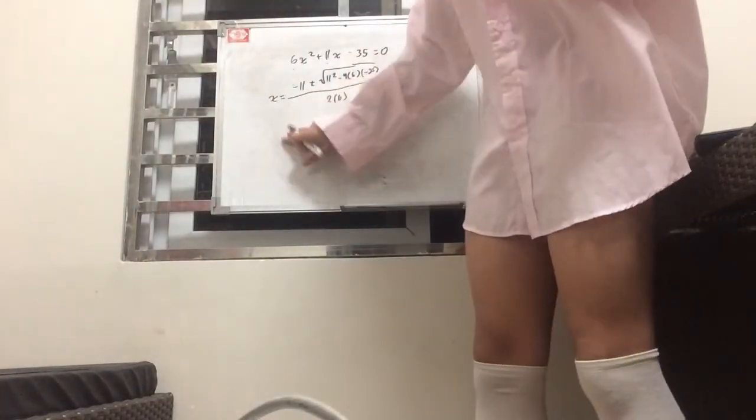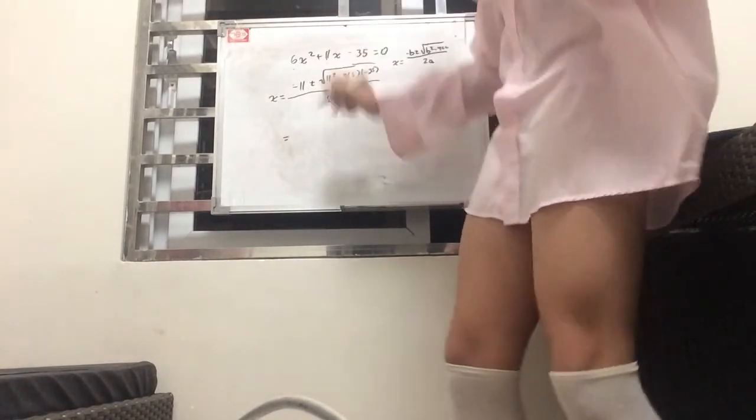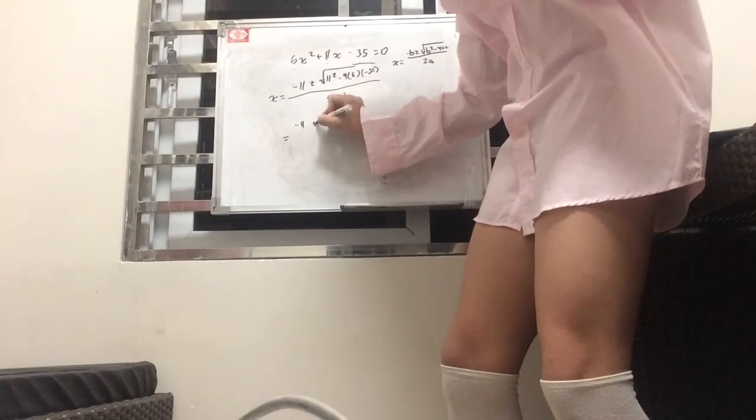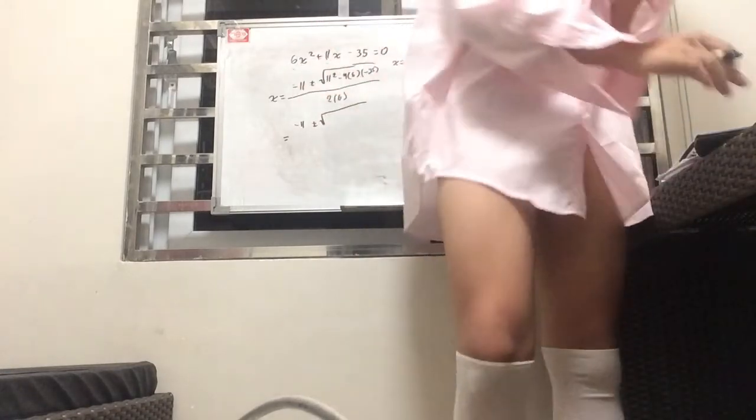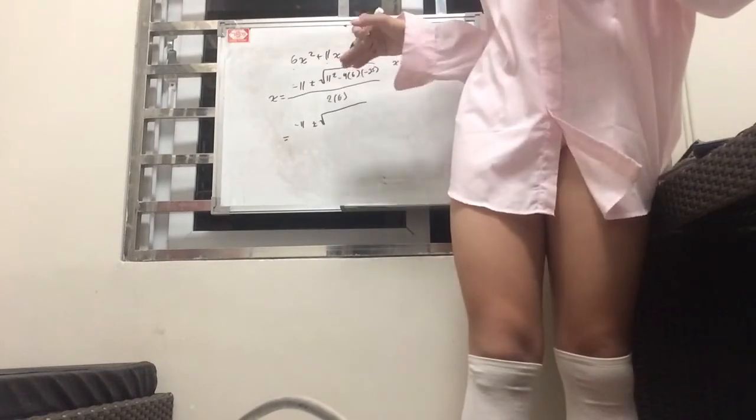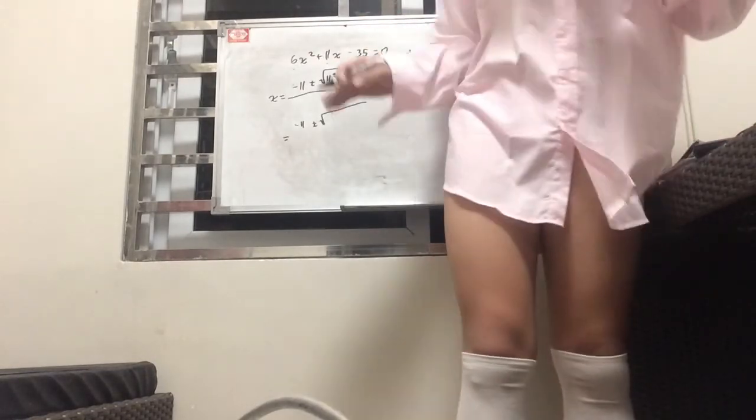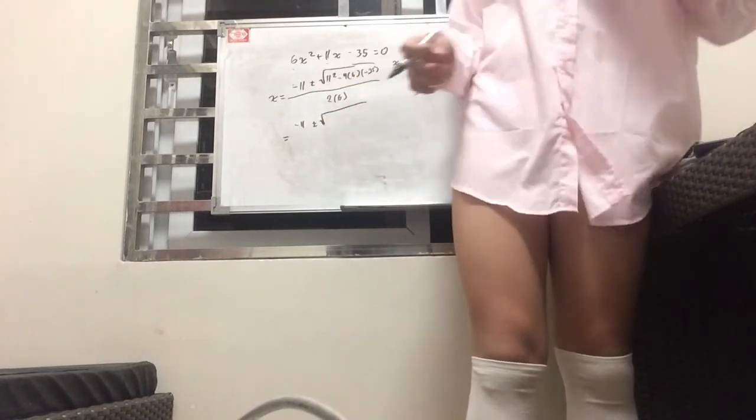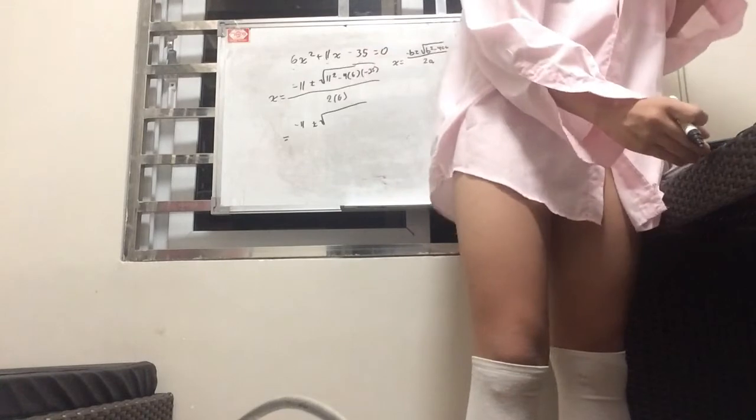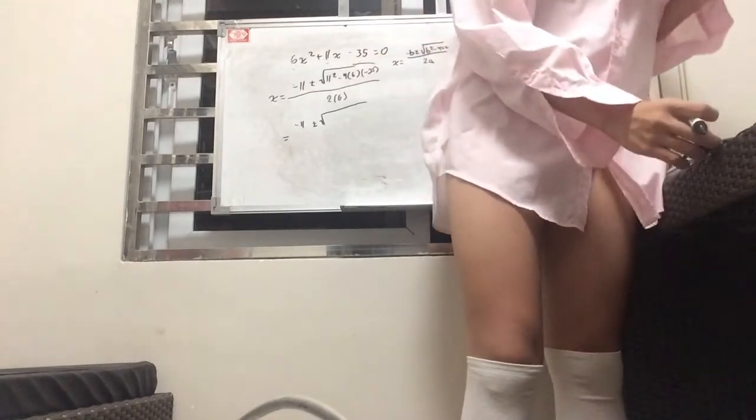And so, I'll just go ahead and solve this. Using our calculator. I'm a bit of a mess tonight. I'm sorry, guys. So, this stays as negative 11 plus minus. Let's simplify this square root here.